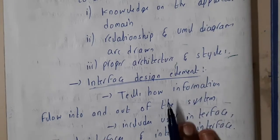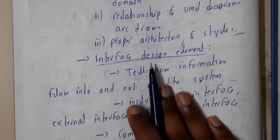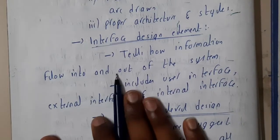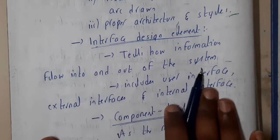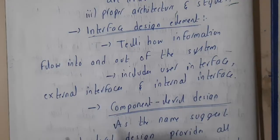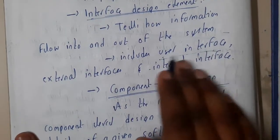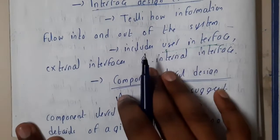Interface design elements tell us how the information flows into and out of the system - what will be going as an input and what will be coming as an output. It includes user interface, external interface, and internal interfaces. We will be discussing in detail about user interface.